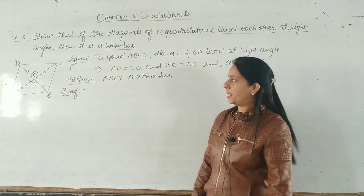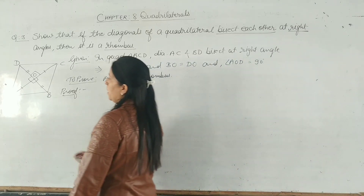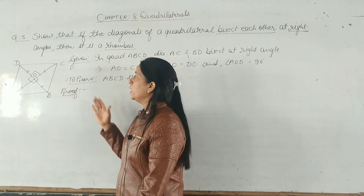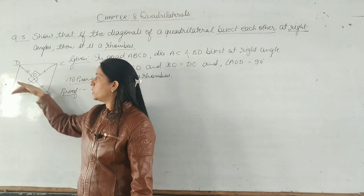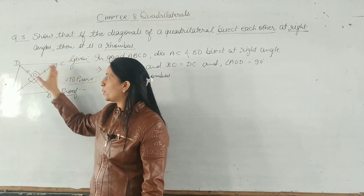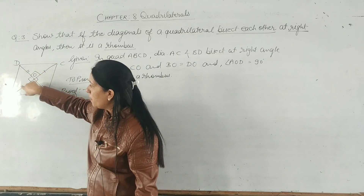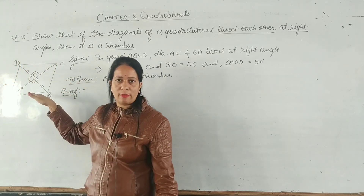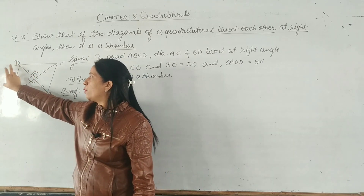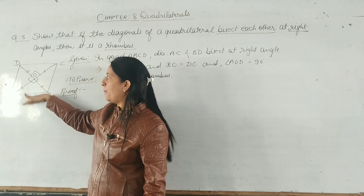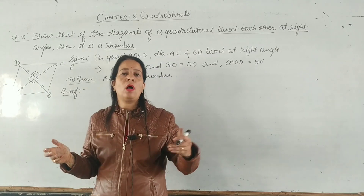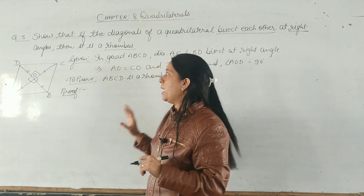The approach: first prove it is a parallelogram, so that we get opposite sides equal. We can take two adjacent triangles and show opposite sides are equal. Then we take two more adjacent triangles to show adjacent sides are equal. When all sides are equal, ABCD is a rhombus.